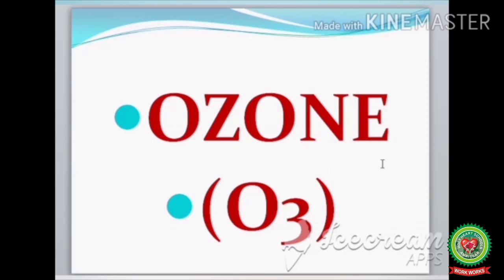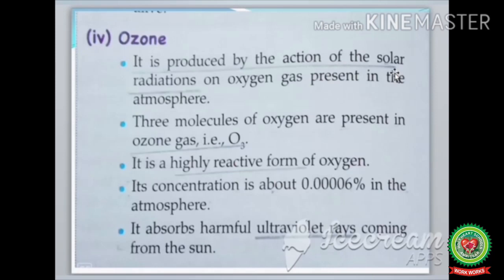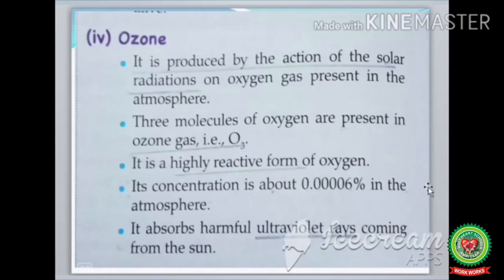Ozone (O3) gas is produced by the action of solar radiation on oxygen present in the atmosphere. It is a highly reactive form of oxygen — three molecules of oxygen are present in ozone (O3). Ozone absorbs harmful ultraviolet rays coming from the sun and keeps the earth warm. Its concentration is about 0.0006% in the atmosphere.